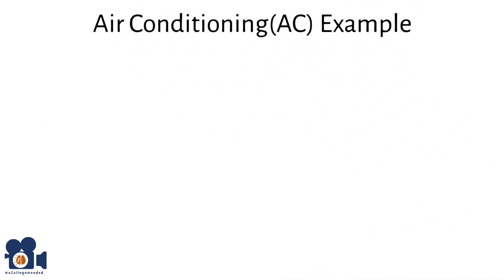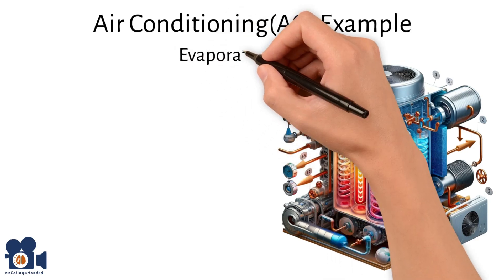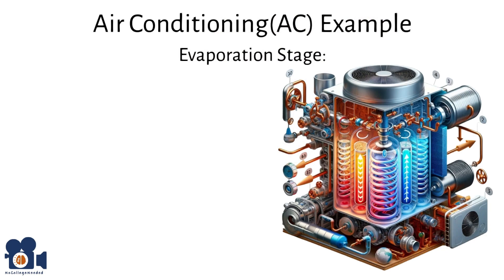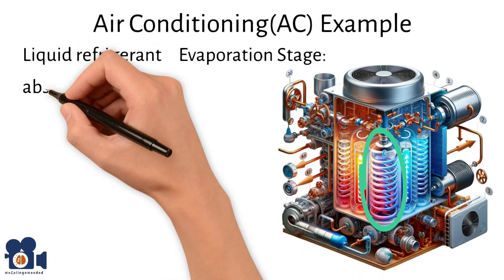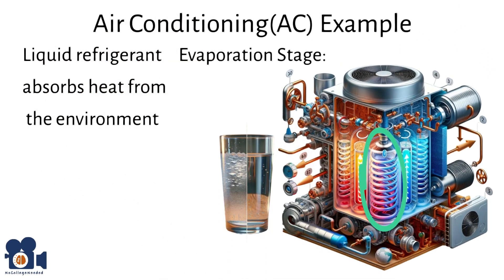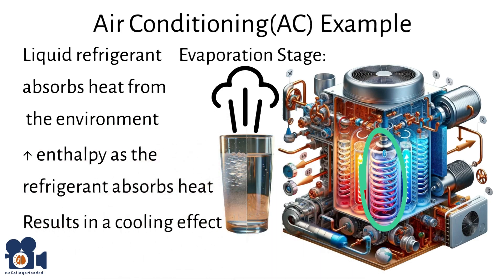Now that we know a bit more about enthalpy, let's go over the air conditioning example. AC works on vapor compression cycles, which use a refrigerant that undergoes phase changes that facilitate the transfer of heat. The key stage where enthalpy plays a cooling role is in the evaporation stage, similar to sweating. Inside the evaporator coil, the liquid refrigerant absorbs heat from the environment — like water in a glass that gets warmer and evaporates — turning from a liquid to a vapor. This process involves a significant increase in enthalpy as the refrigerant absorbs heat, resulting in a cooling effect on the surrounding area.